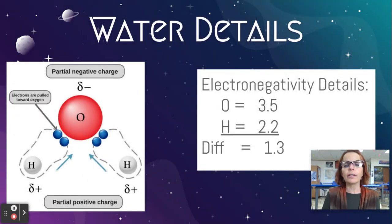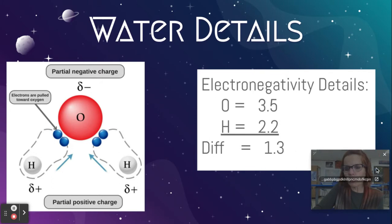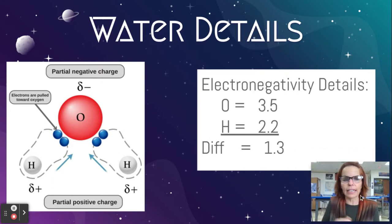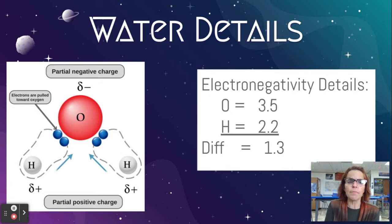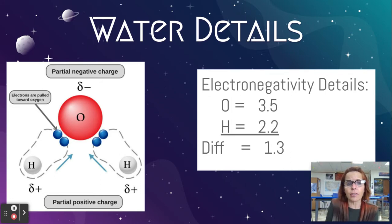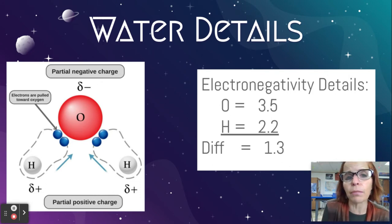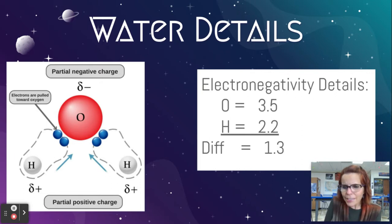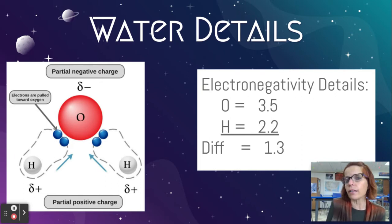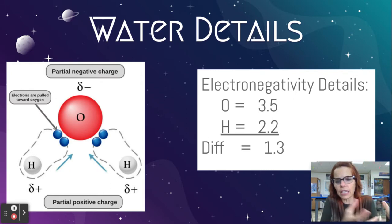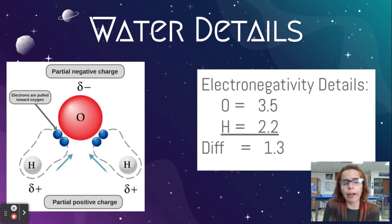Water is, in fact, what we call polar covalent and not just covalent. You need to know a lot about water, just to be clear. Water is H₂O. The red atom here is oxygen, and the two hydrogens are the white atoms below it.